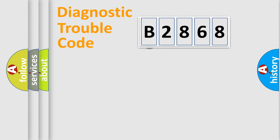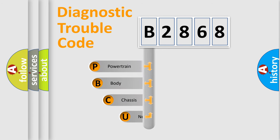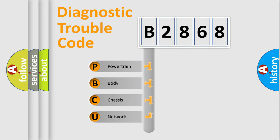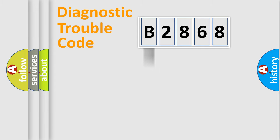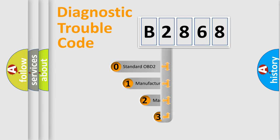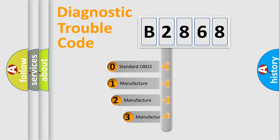First, let's look at the history of diagnostic fault code composition according to the OBD2 protocol, which is unified for all automakers since 2000. We divide the electric system of an automobile into four basic units: Powertrain, Body, Chassis, and Network. This distribution is defined in the first character of the code.